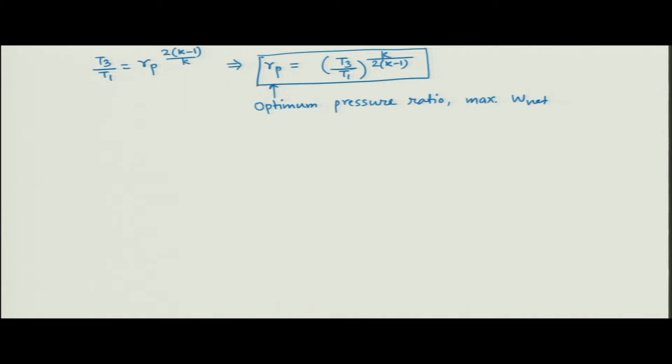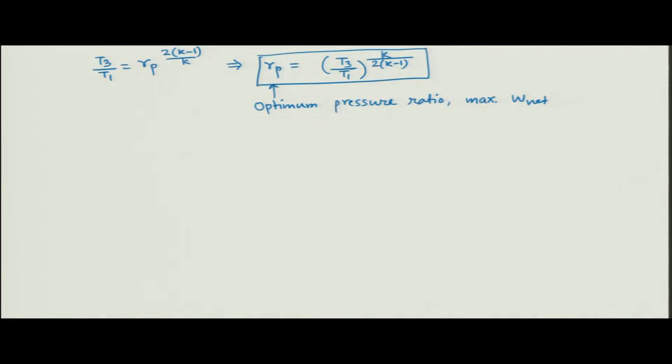If T1 is the ambient temperature (around 300 K) and you want to increase the maximum work output, you need to increase T3, which increases the pressure ratio and gives higher maximum work output. However, T3 is limited by metallurgical considerations — the turbine blade must withstand the temperature after combustion. Nowadays there are advanced materials and silicon carbide coatings that allow achieving higher temperatures.